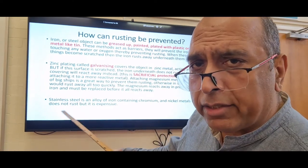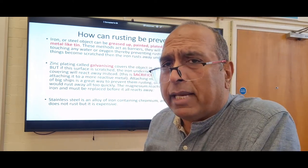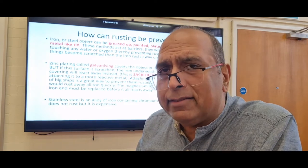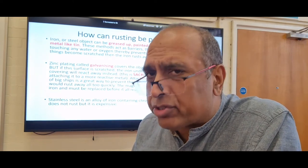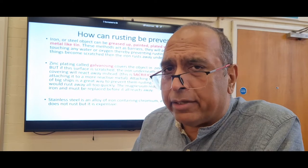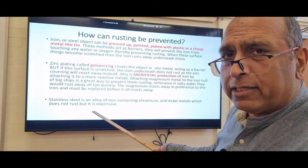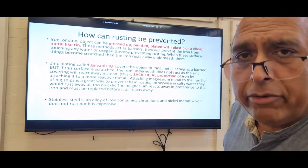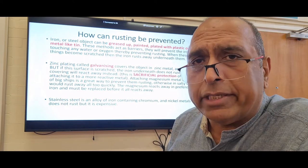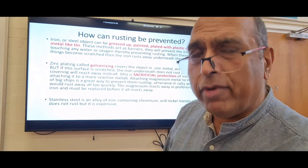Stainless steel is what kitchen sinks and appliances are made from. It is steel — iron and carbon — plus nickel and chromium. Those additional metals make it expensive, but stainless steel is guaranteed not to rust, which is really important in a kitchen setting.